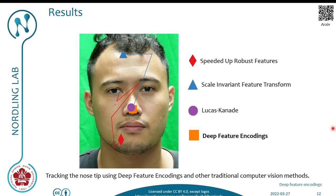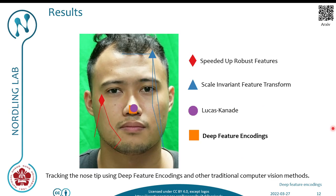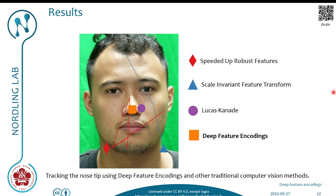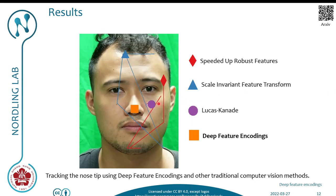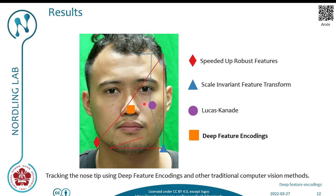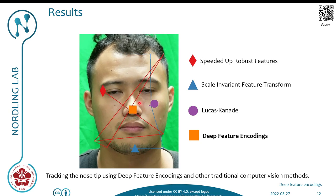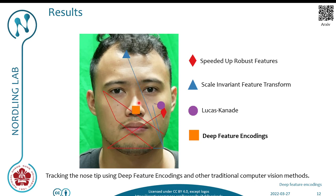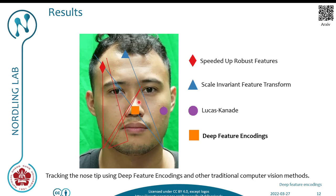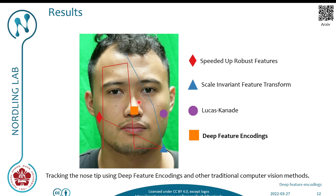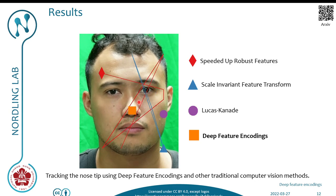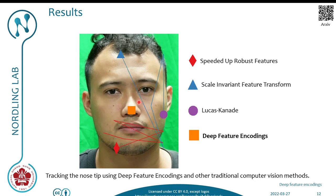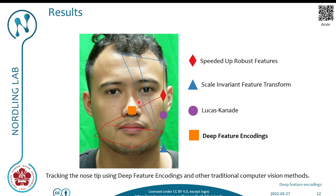When we compare deep feature encodings with all the other methods, we can see that our method is the only one to remain on the nose while all the others fail. Also, during our experiments, we proved that our method is the most precise under a variety of situations. When talking about feature tracking algorithms, precision is a key characteristic because, as we have demonstrated, once the algorithm starts tracking the wrong point, the error is likely to diverge because the algorithm is not likely to correct itself.